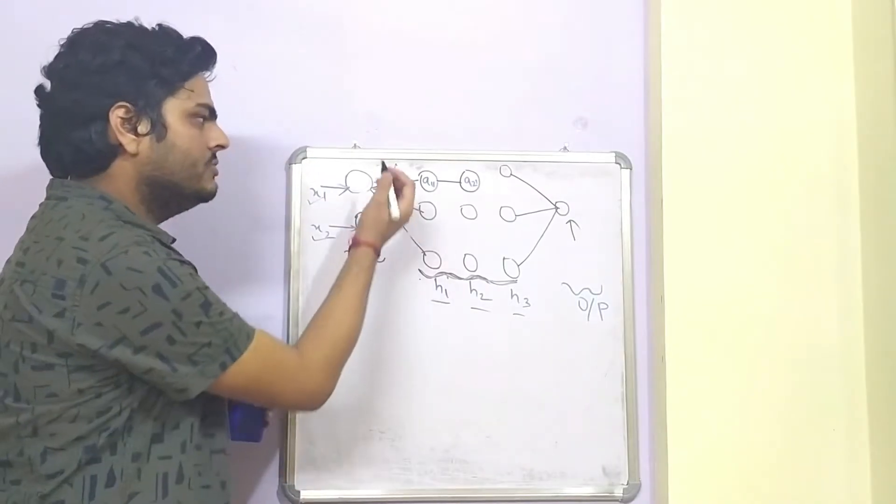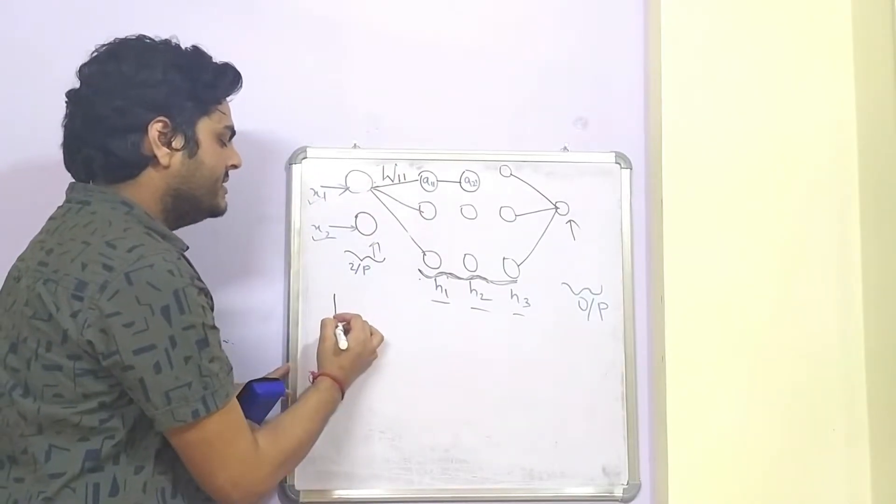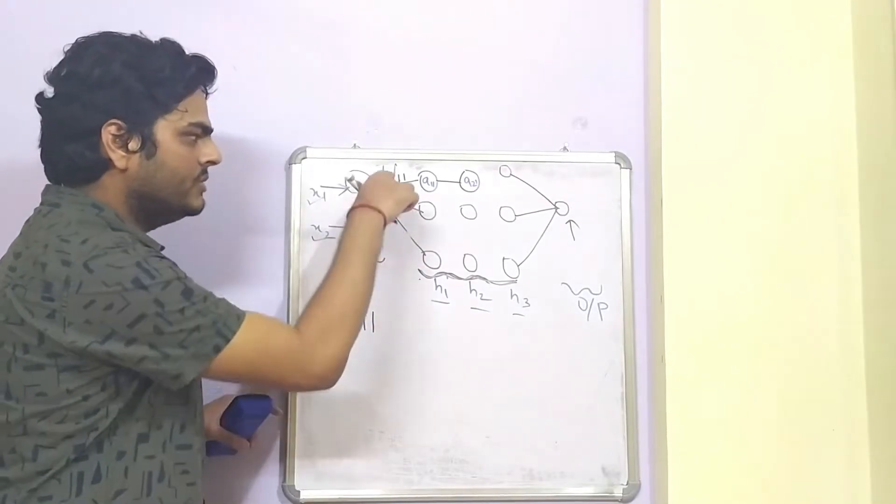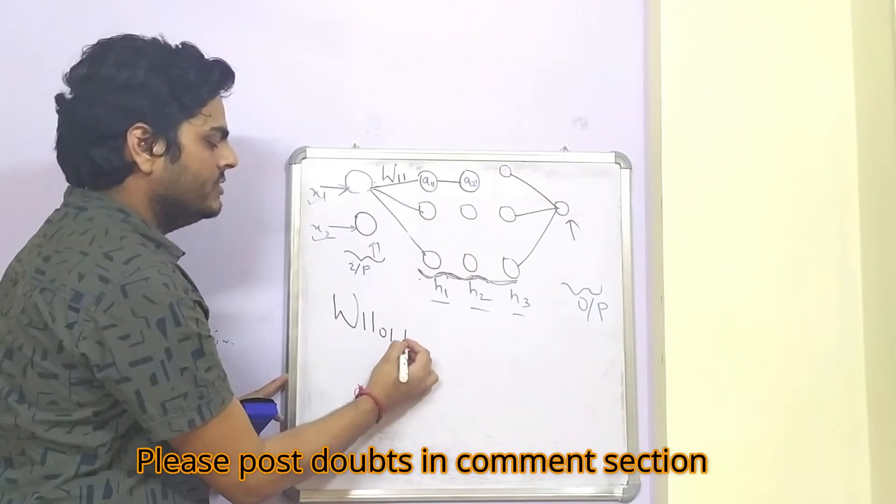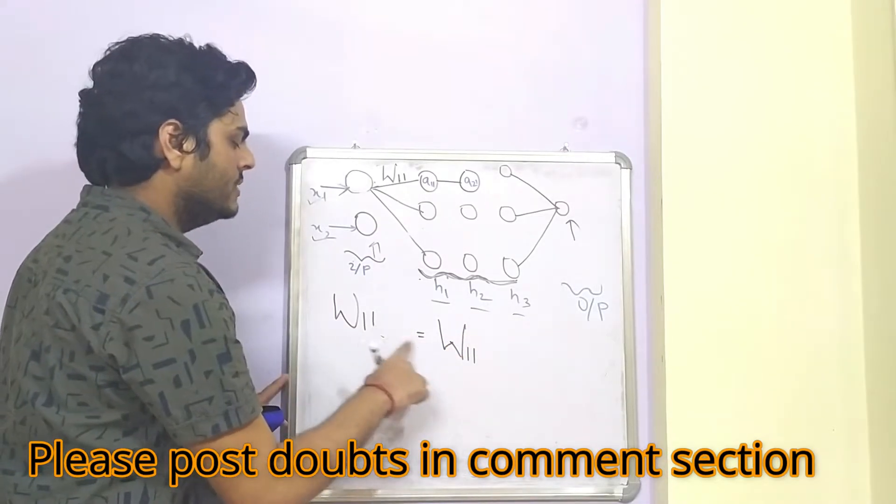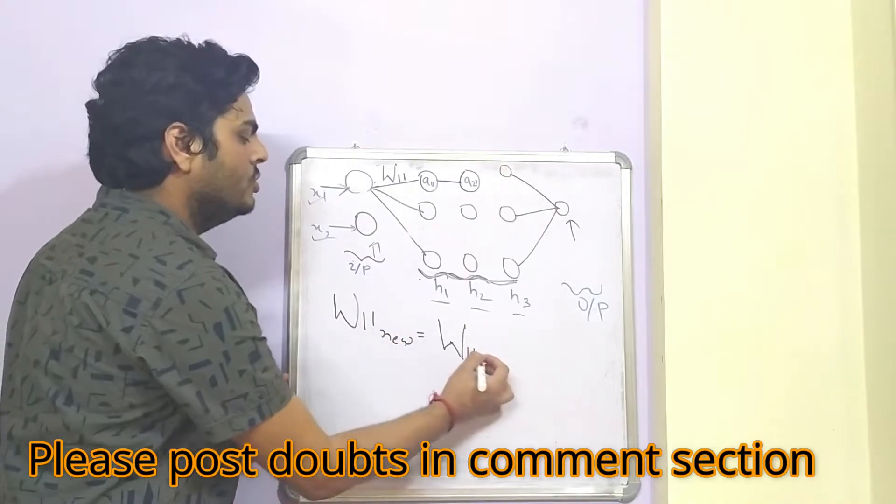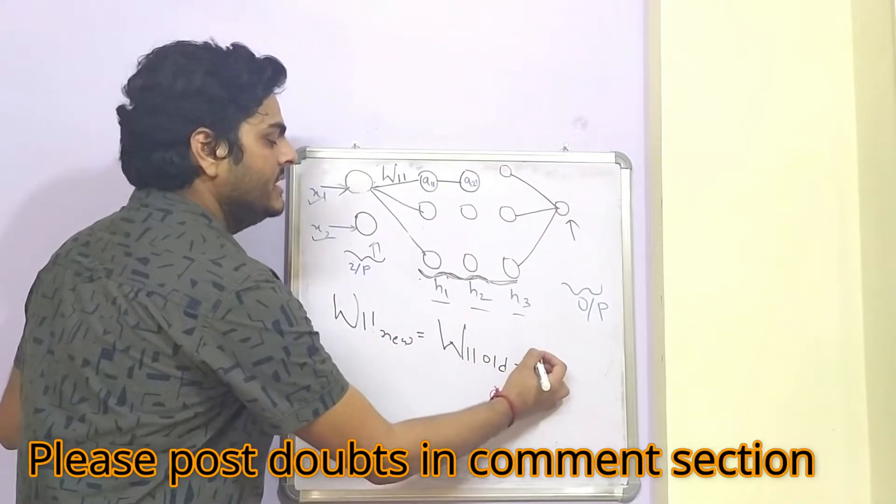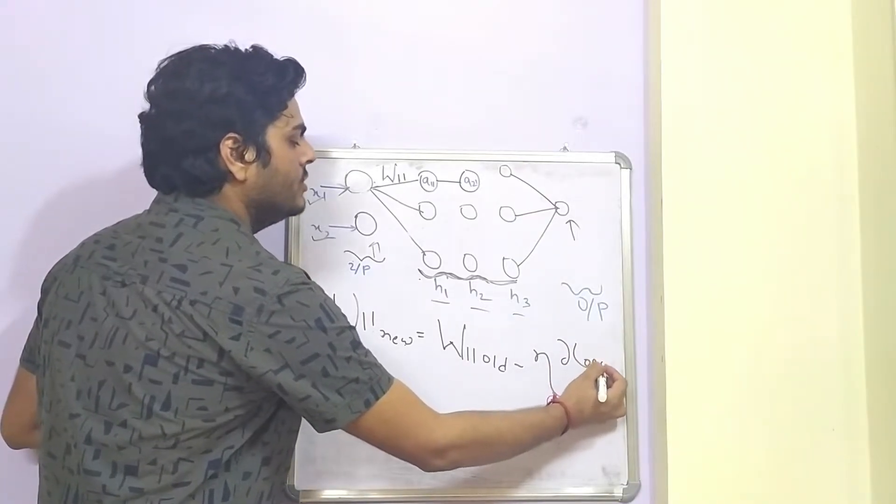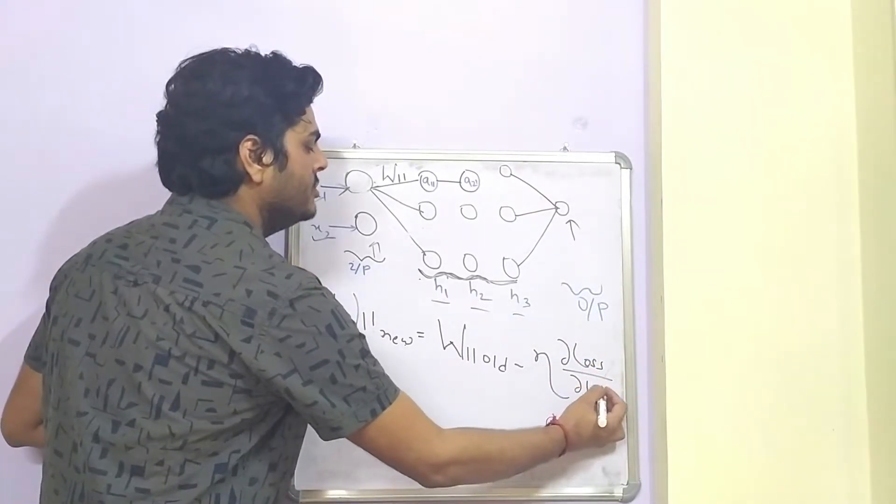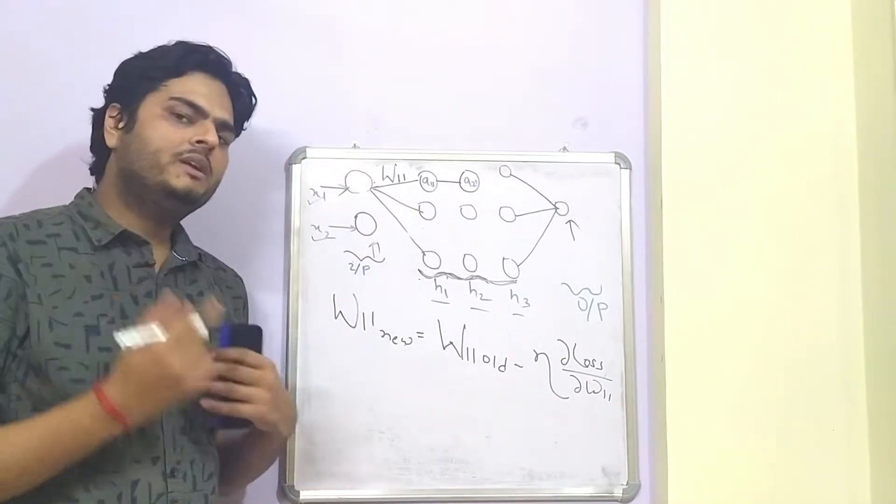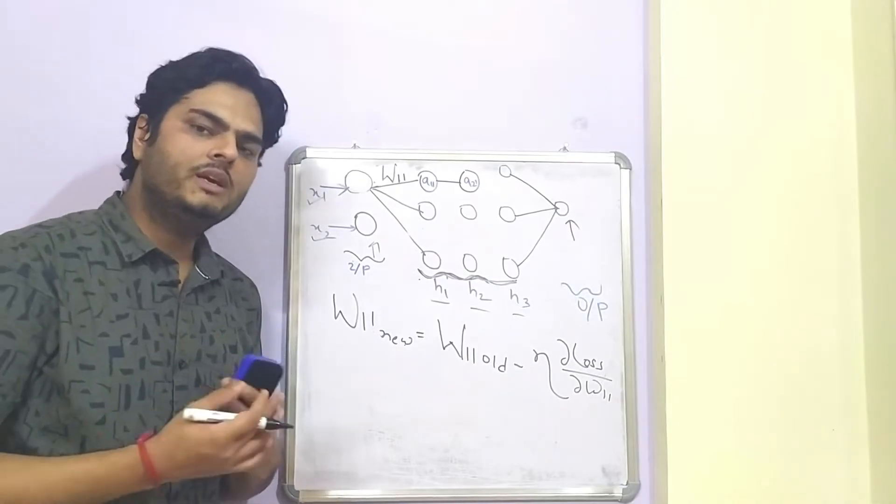So can you recollect what is the formula for gradient descent? If I have to optimize weight W11, then how gradient descent will work is W11 new is equal to W11 old minus eta, which is the learning rate, multiplied by derivative of loss function with respect to W11. This is how gradient descent works. I have explained that in a separate video, you can see the link.